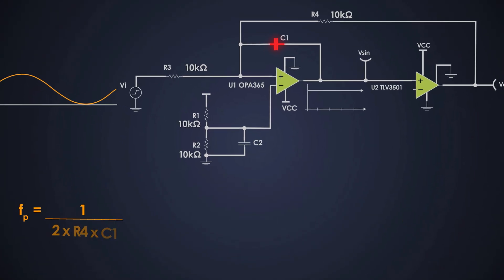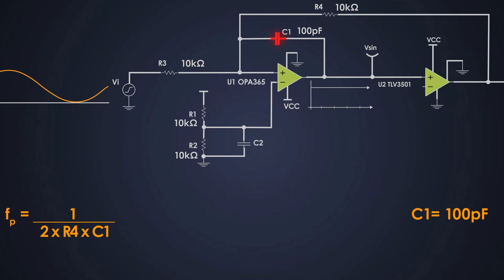We place a small capacitor C1 of around 100 pF in the feedback path. This capacitor limits the bandwidth of the amplifier, which gives us approximately 159 kHz.